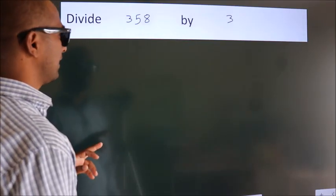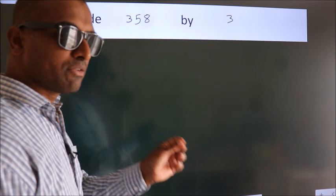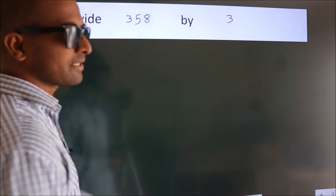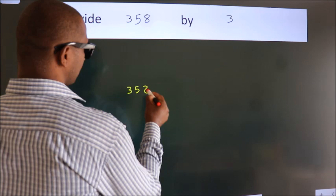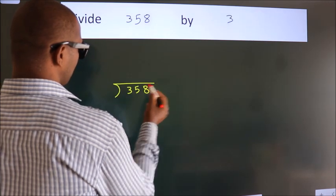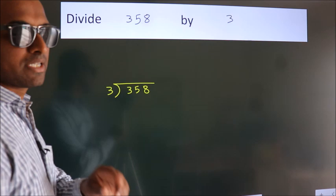Divide 358 by 3. To do this division, we should frame it in this way. 358 here, 3 here. This is your step 1.